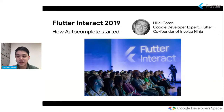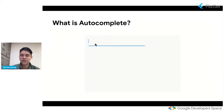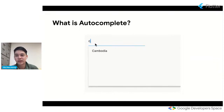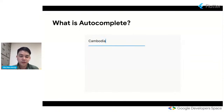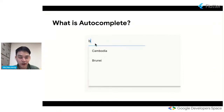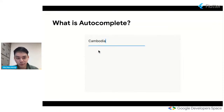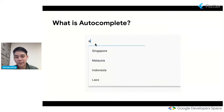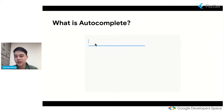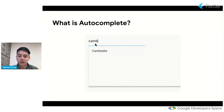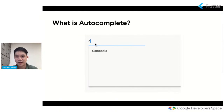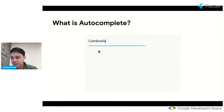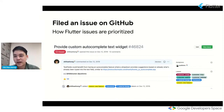Autocomplete is a normal text input enhanced by a panel of suggested options — as you type into a text field, it brings up a dropdown menu. This wasn't well supported in Flutter. Hillel was using a third-party package called typeahead, but it lacked functionality for web and desktop, particularly around keyboard navigation — critical for his Flutter web app. So the first thing I did was file a GitHub issue.